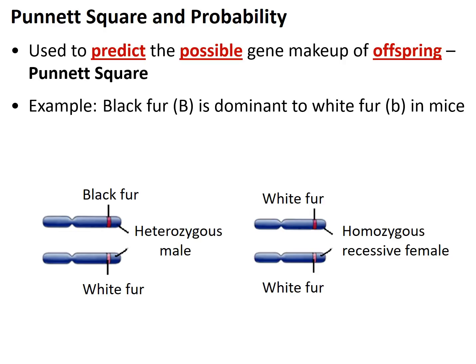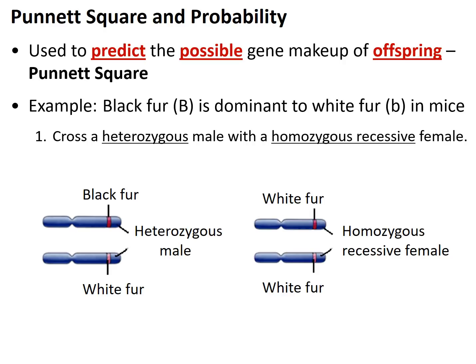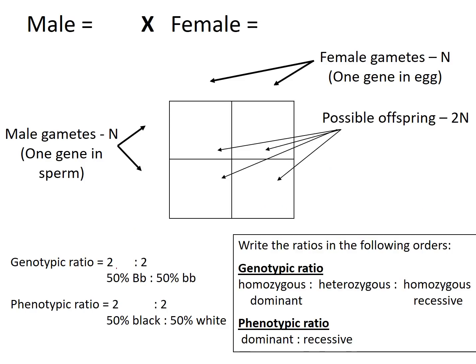If we know that black fur is dominant to white fur in mice, and we cross a heterozygous male with a homozygous recessive female — the heterozygous male has one allele for black fur and one for white fur, and mom being homozygous recessive has two recessive alleles, both for white. So the male's genotype is Bb, phenotype is black. The female's genotype is bb, phenotype is white.